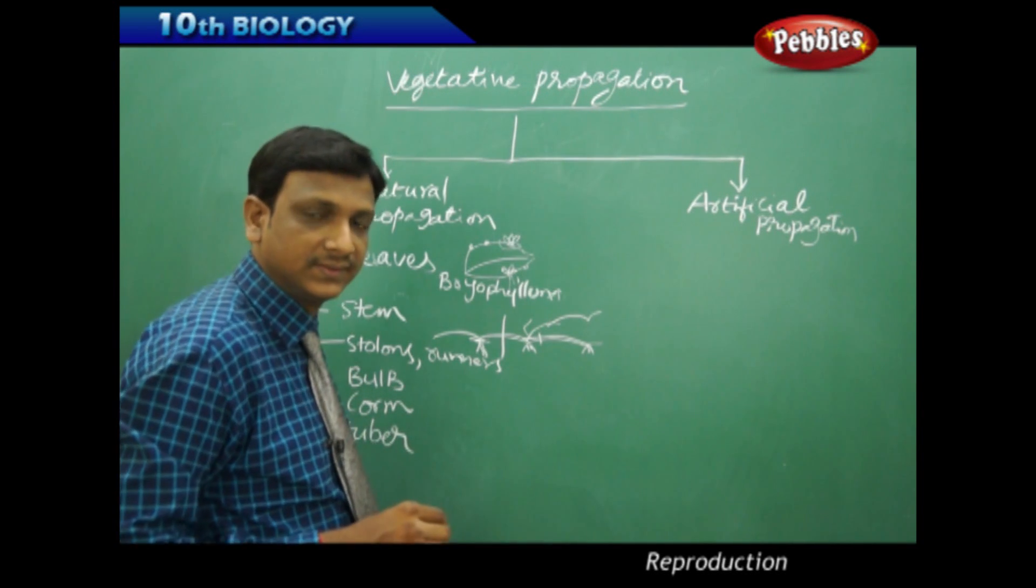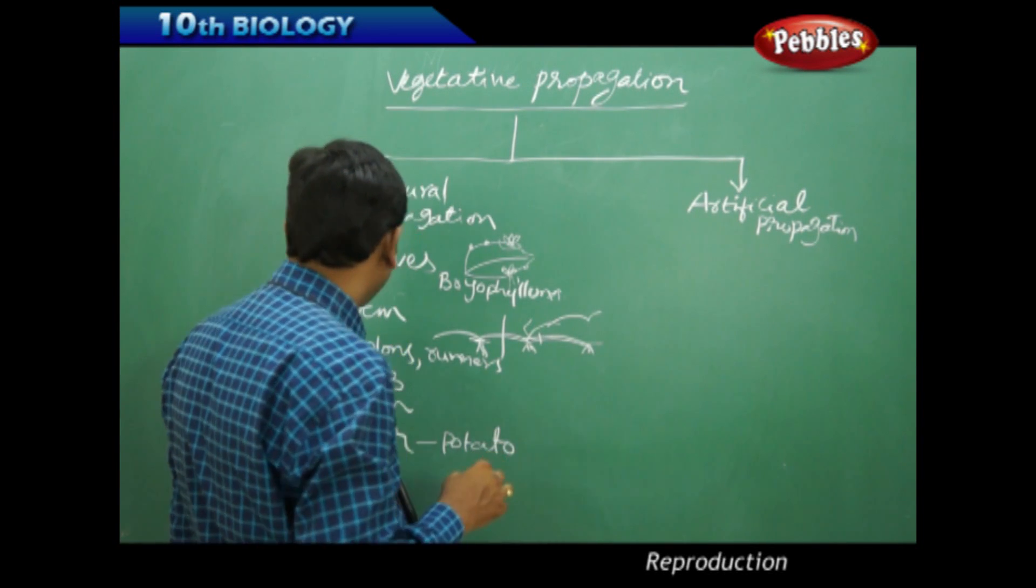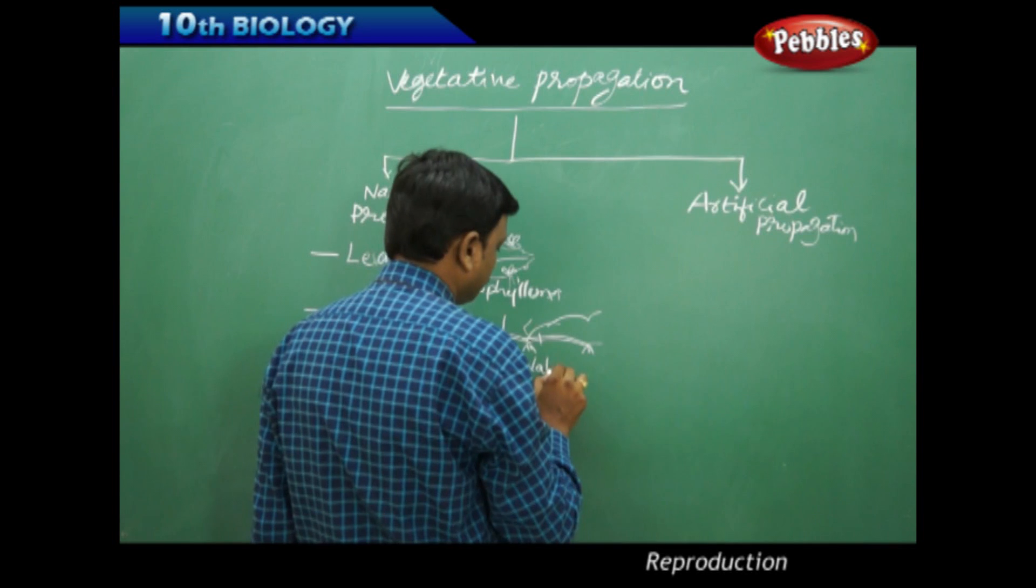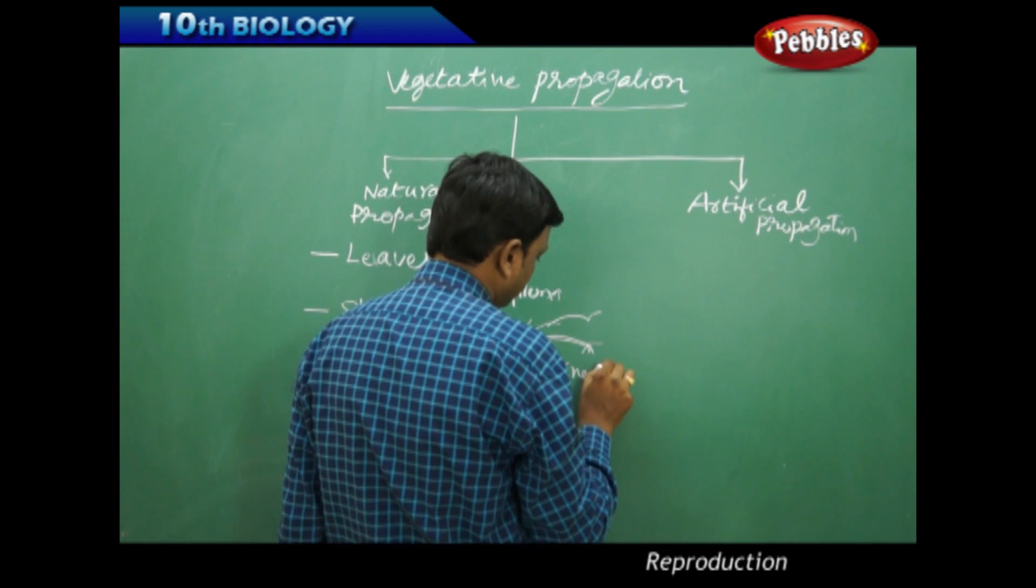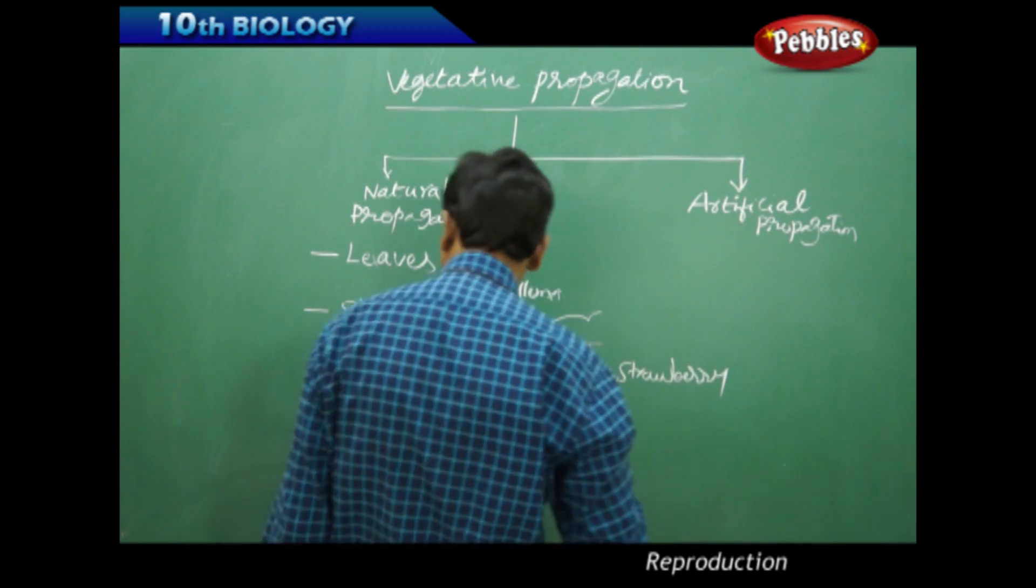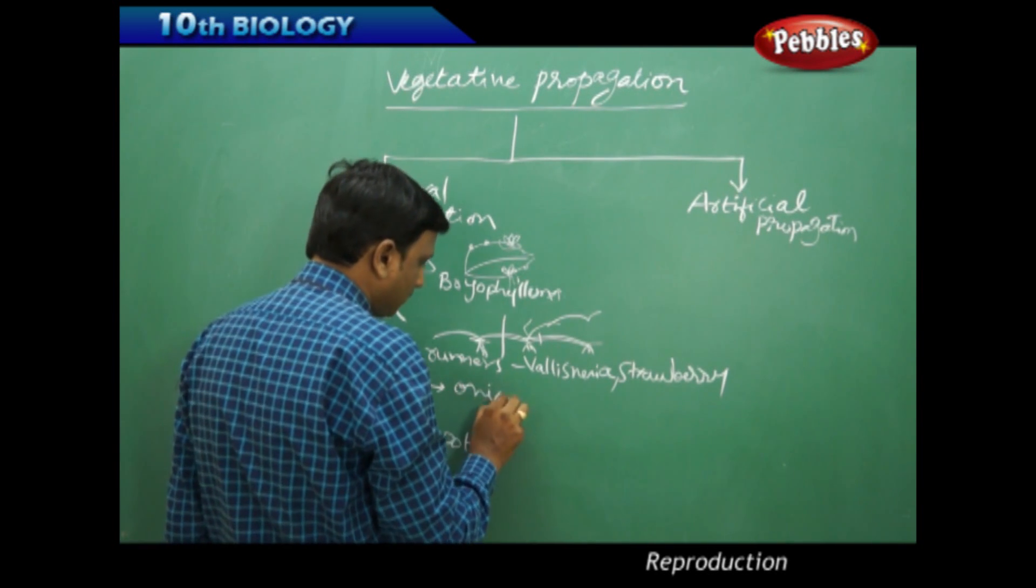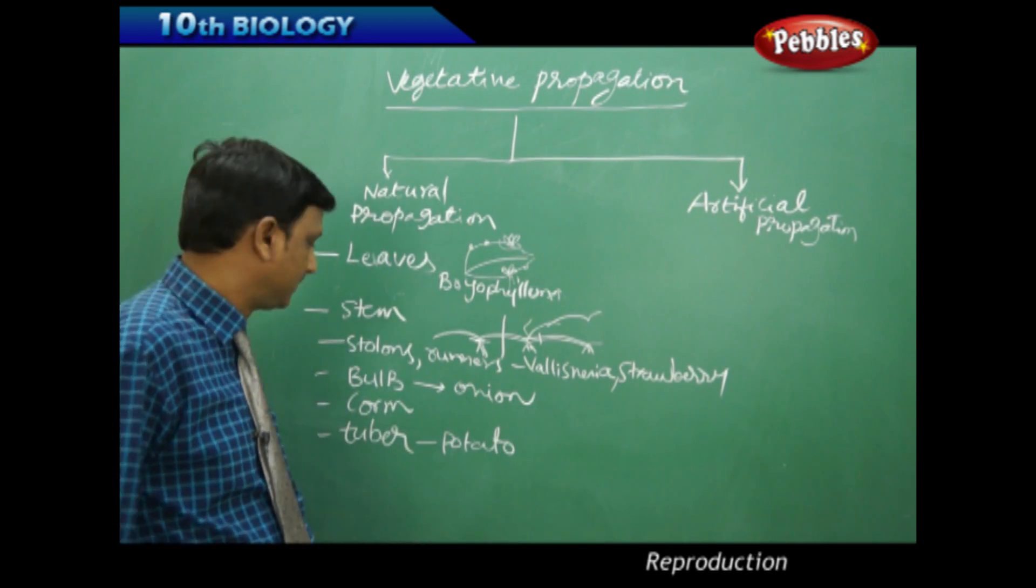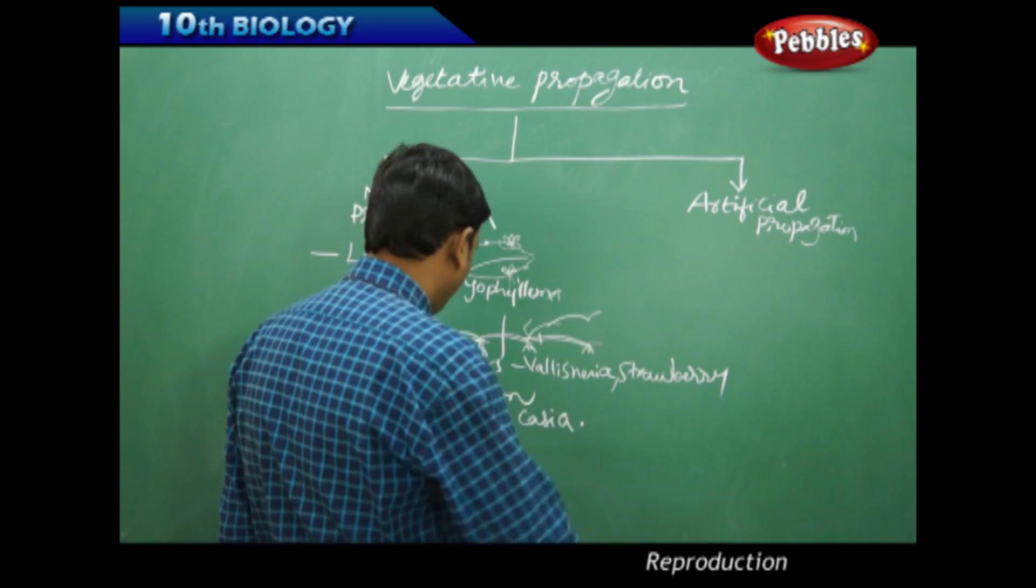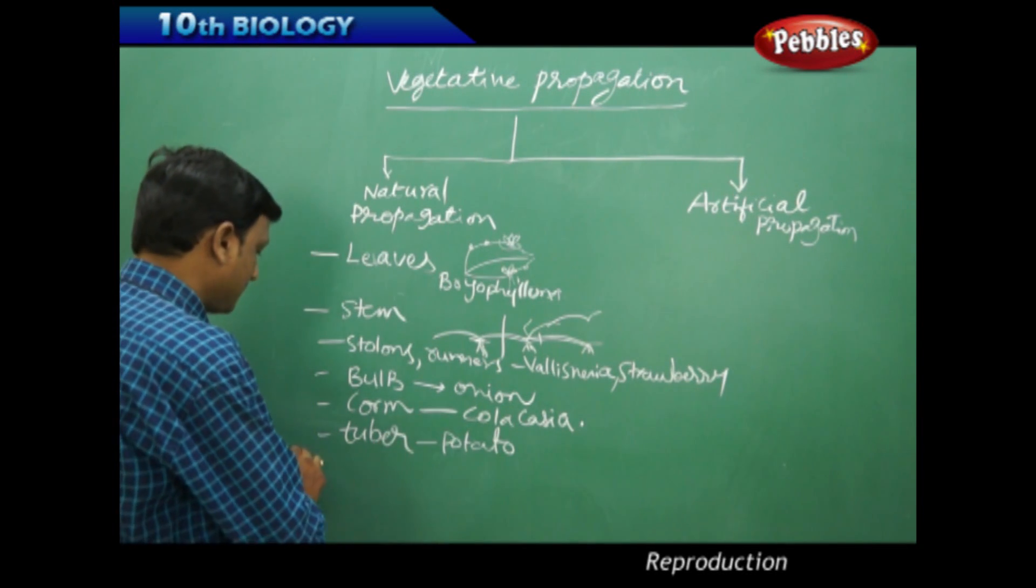Let us see some examples. Tuber: potato. Stolons and runners: vallisneria and strawberry. Bulb: what is an example for bulb? You can write onion is an example for bulb. Corm: colocasia. These are the examples for propagation through stem.